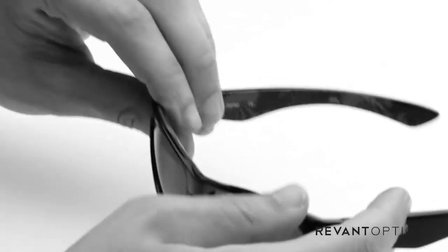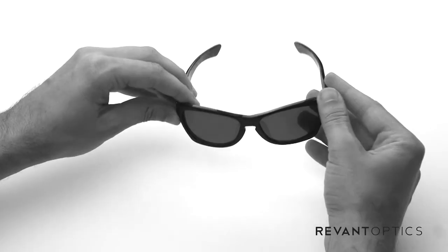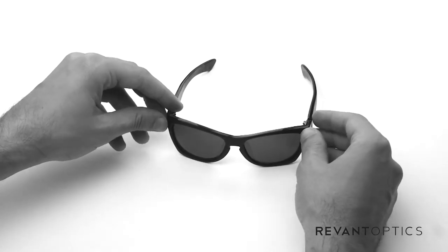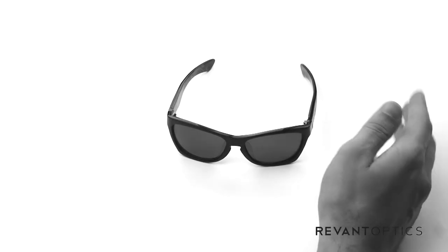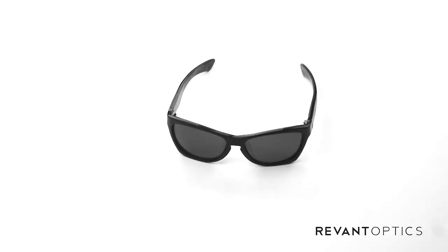These particular lenses are Revant Optics Stealth Black Polarized Lenses. They're one of our darker tints. If you're looking for other colors or mirror coatings, you can find them at RevantOptics.com.